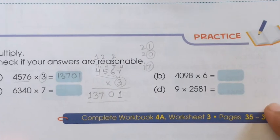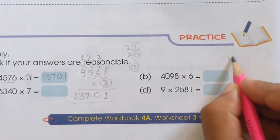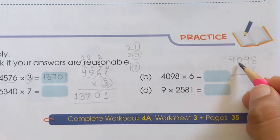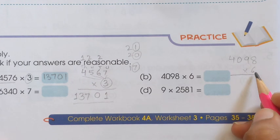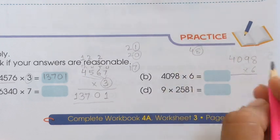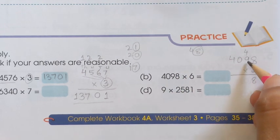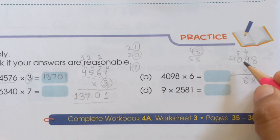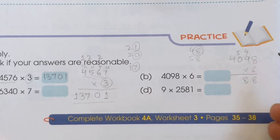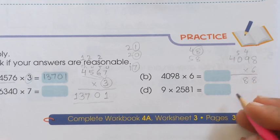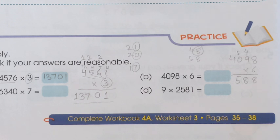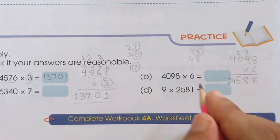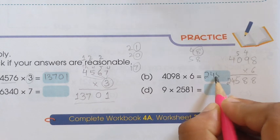इसी तरह: 6 को 4098 के साथ multiply करना है। 6 का table पढ़ेंगे। 6 × 8 = 48 — सिर्फ 8 नीचे लिखेंगे, 4 को carry forward। 6 × 9 = 54, plus 4 = 58 — 8 लिखेंगे, 5 carry forward। अब 0 के साथ multiply करते हैं: किसी भी number को 0 से multiply करने पर answer 0 आता है। 6 × 0 = 0, carry forward 5 as it is लिखेंगे। 6 × 4 = 24 — last digit है, 24 पूरा उठाकर लिख देंगे। Answer: 6 × 4098 = 24,588।